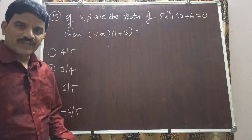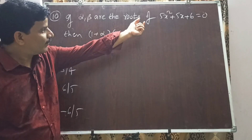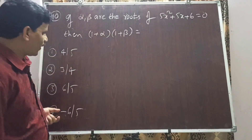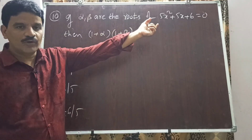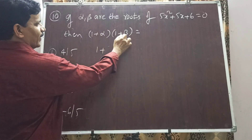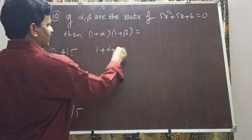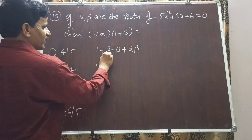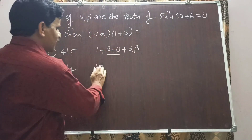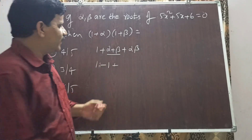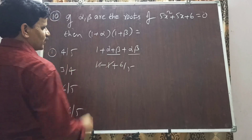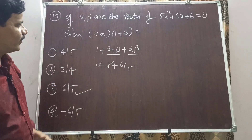Question 10: If alpha and beta are roots of 5x² + 5x + 6 = 0, then (1+alpha)(1+beta) equals how much? Expanding: 1 + beta + alpha + alpha·beta = 1 + (alpha+beta) + alpha·beta. Sum of roots = -b/a = -5/5 = -1. Product of roots = c/a = 6/5. So: 1 + (-1) + 6/5 = 0 + 6/5 = 6/5. Option 3 is the right answer.